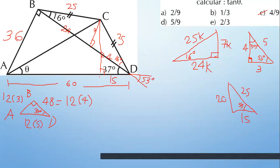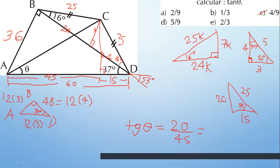Entonces aquí tienes 15. ¿Cuánto te falta para llegar a 60? 45. De aquí sería 45. Y de altura tienes 20. ¿Qué te están pidiendo? Tangente de theta: opuesto sobre adyacente. Opuesto 20, adyacente 45. ¿Qué sacas? 4 sobre 9. Tu amigo tenía razón.